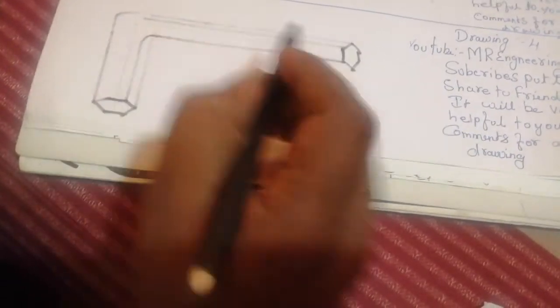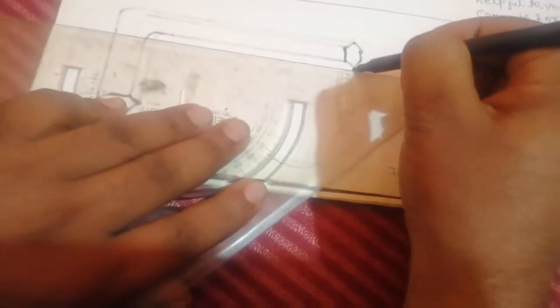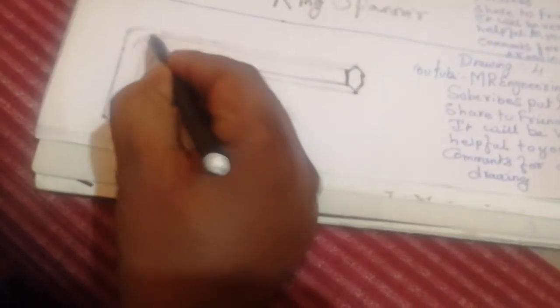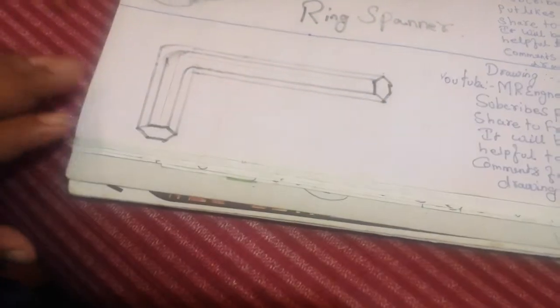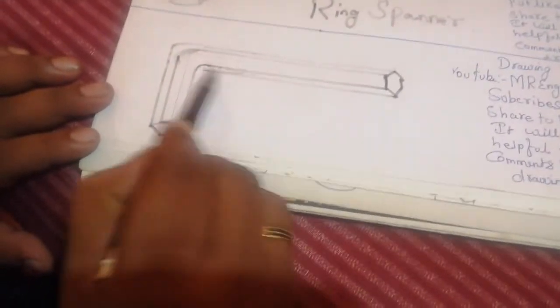That's all for the outline. This is very easy. Then take a curve and join in this hexagonal edge, very easy. Then if you want to do shading, just do like this.